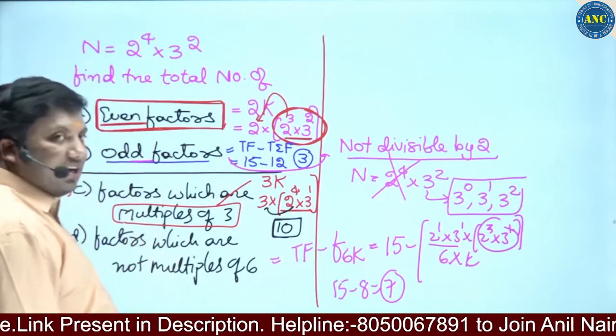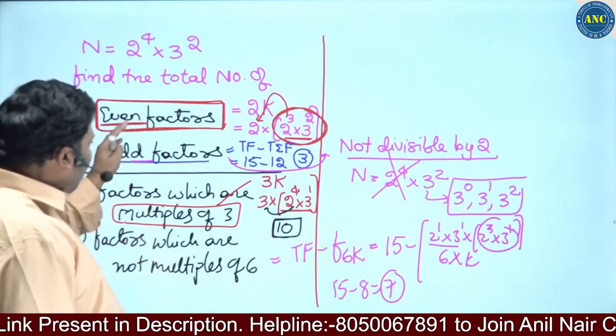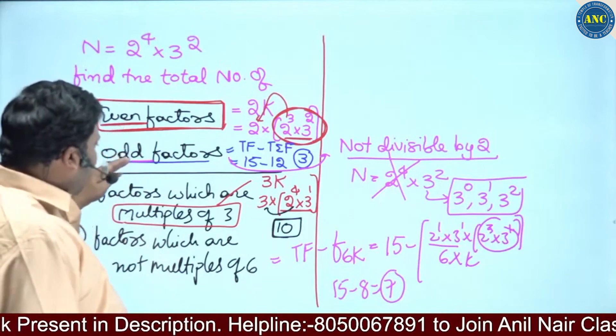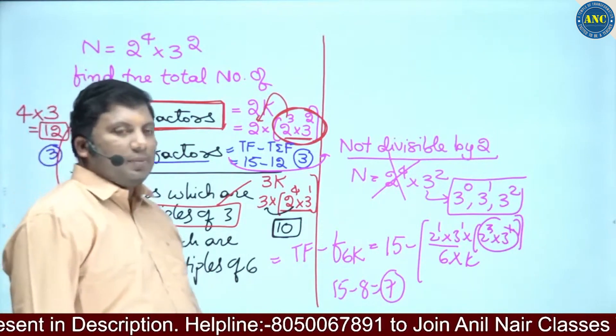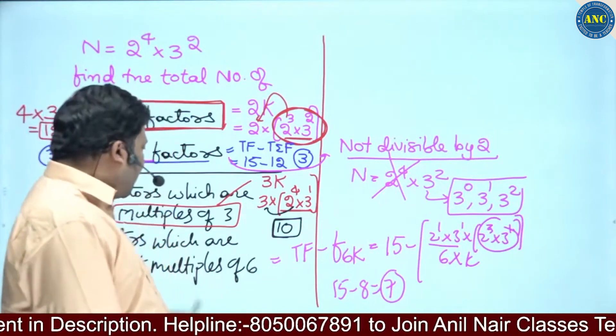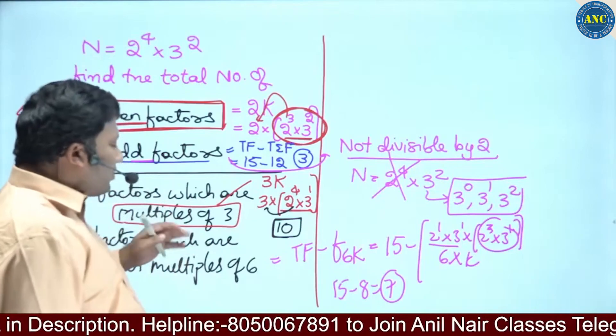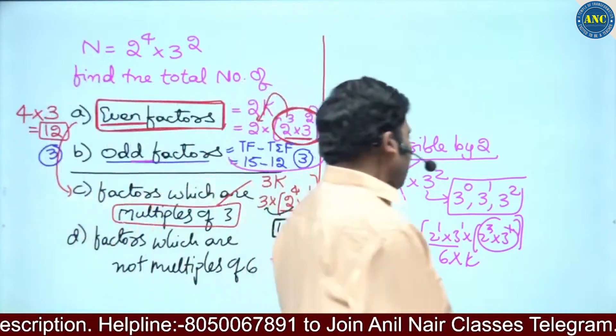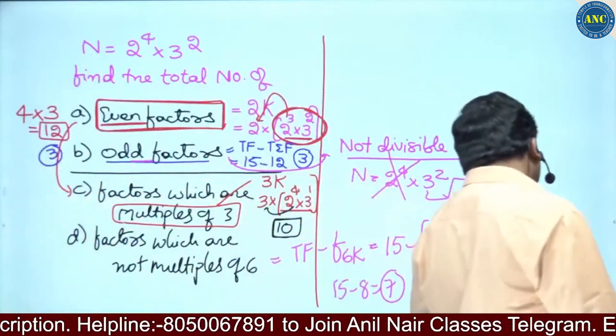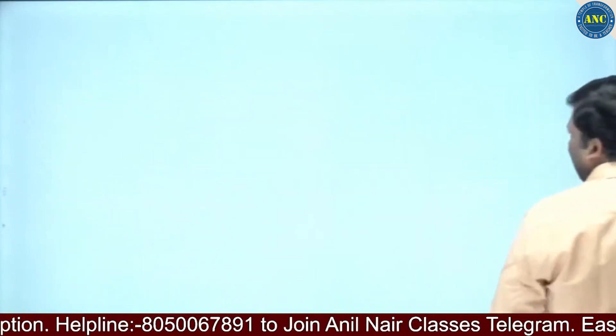So that covers all 4 questions — and the concept is clear. Even factors, odd factors, factors which are multiples of 3, and factors which are not multiples of 6. I hope the idea is clear.